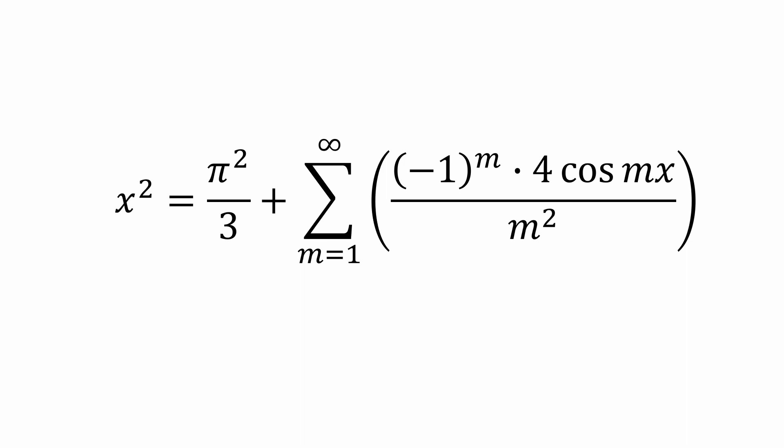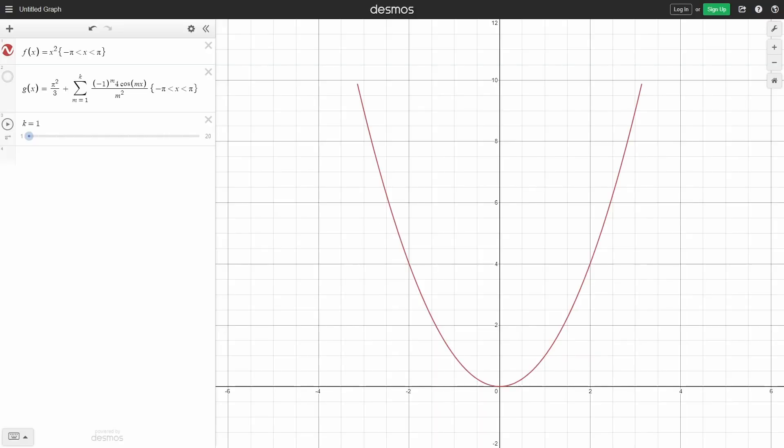Now, before we get to the main event, let's take a moment to visually appreciate what a beautiful job the Fourier series does in approximating x squared. I have x squared displayed and graphed in red. That's the function which we took the Fourier series of over the interval from negative π to π. Now in blue, I have the Fourier series that we derived for x squared. We're actually showing just one term of the series, and already it doesn't do a bad job matching up with x squared, does it?